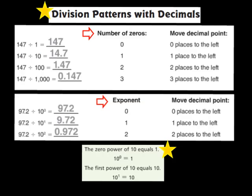Now for the next problem, we see 147 being divided by 10. Well, in the number 10, I know there is one zero. So what that means is I'm going to move that decimal one place to the left.